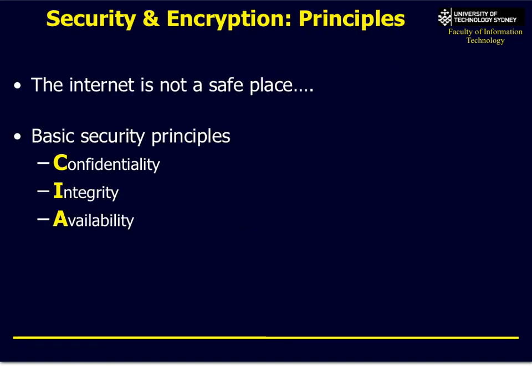You can categorize the security issues into three main areas. We call it CIA — C for confidentiality, I for integrity, and A for availability. I'll talk about those in the next slide.